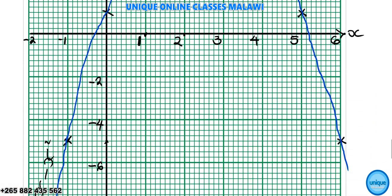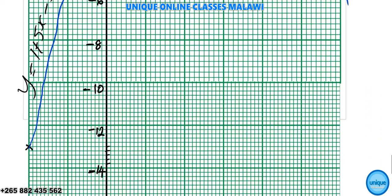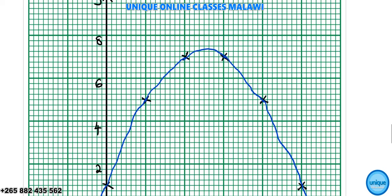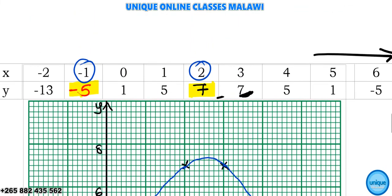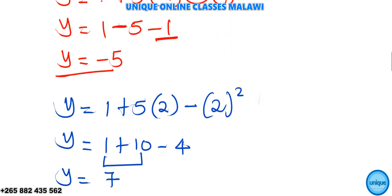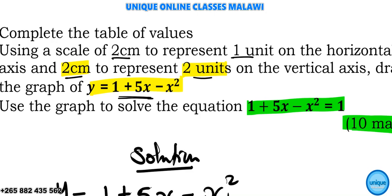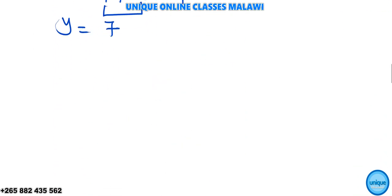Now what do we do next? We should solve using the graph. We should solve this equation: 1 plus 5x minus x squared is equal to 1.